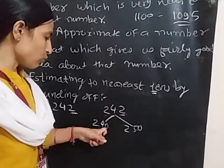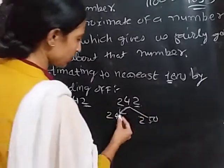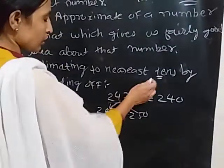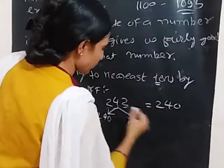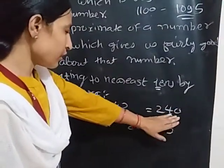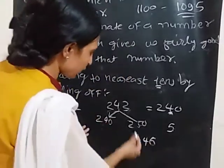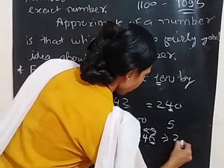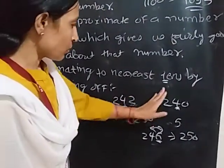You can see that 242 rounds off to 240. The rule is: look at the unit place. If it is less than 5, we take the previous tens. If it is 5 or greater, we go to the next tens. So for 242, the unit place is 2, which is less than 5, so the answer is 240.